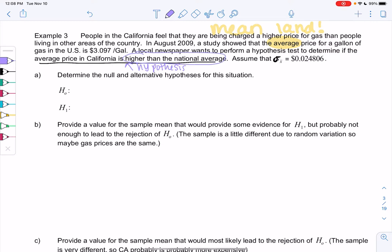To determine if the average price in California is higher than the national average. So higher than the national average, and we have the word average, so mu is higher or greater than the national average, which is $3.097, and that'll be H1, what we want to prove. And then the way stats works is our H0 is always equal to that number.